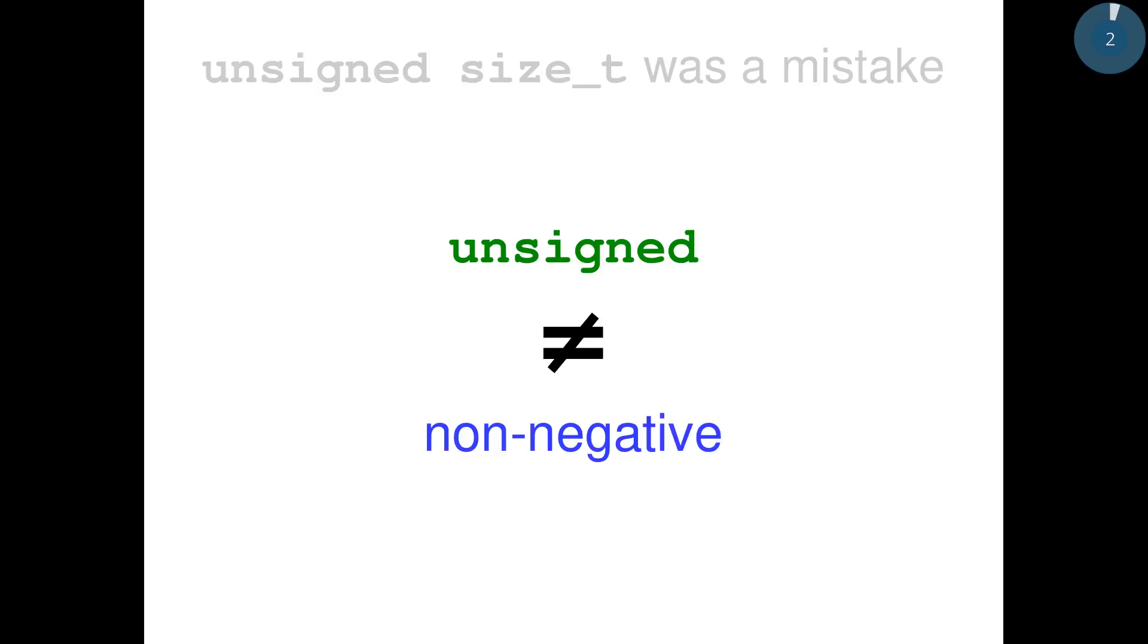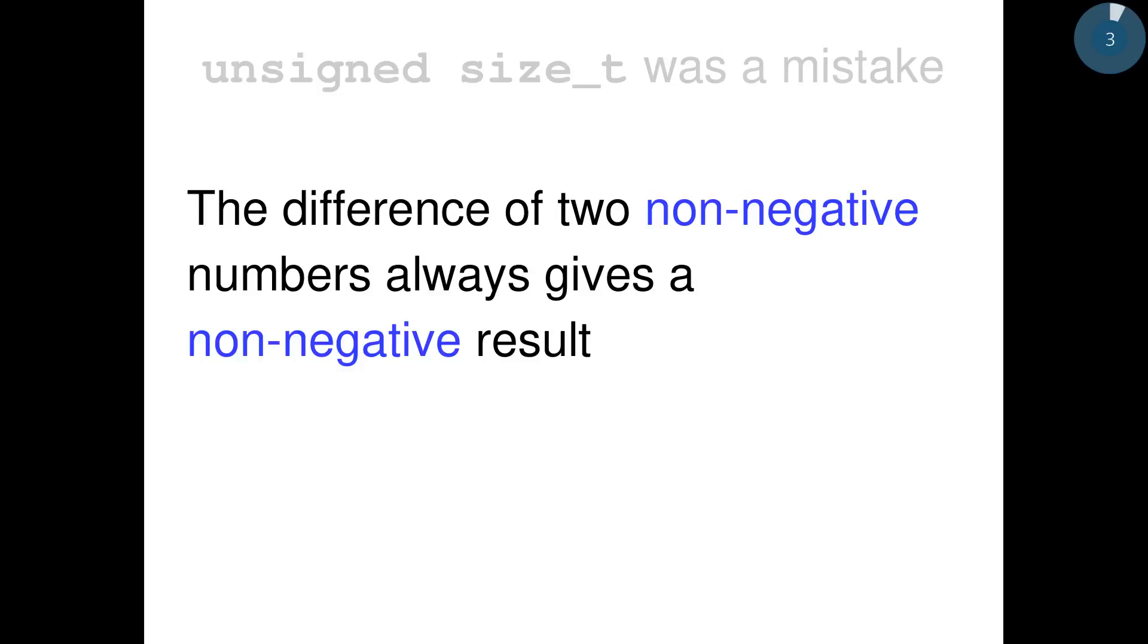The first thing we should consider is that unsigned does not mean non-negative. Non-negative has a very clear meaning in current English. For example, if I say that the difference of two non-negative numbers always gives a non-negative result, you will say no. Because, for example, 3 minus 4 is equal to minus 1, and both 3 and 4 are non-negative numbers.